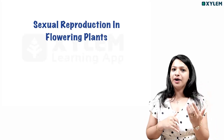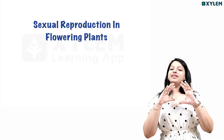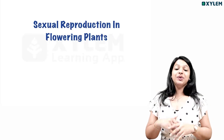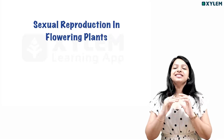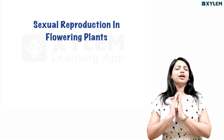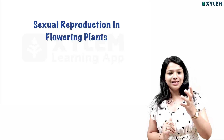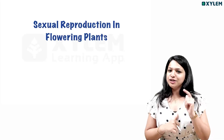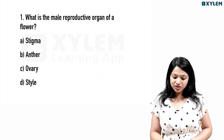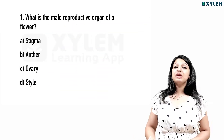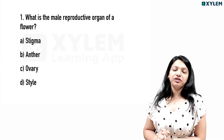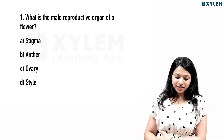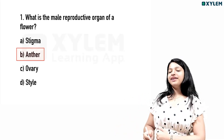In this video we are going to learn more about sexual reproduction in flowering plants. The first question is: what is the male reproductive organ of a flower? The male reproductive part of a flower — we will talk about stigma and style as the female part, and we will talk about the anther.